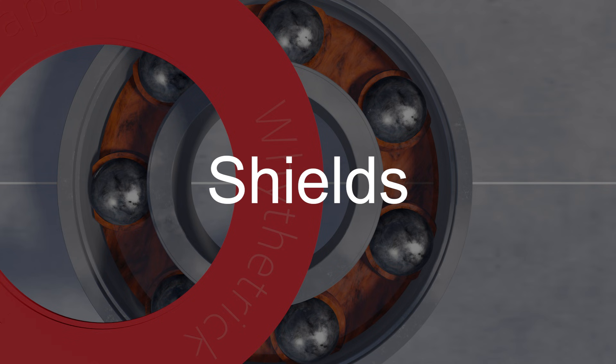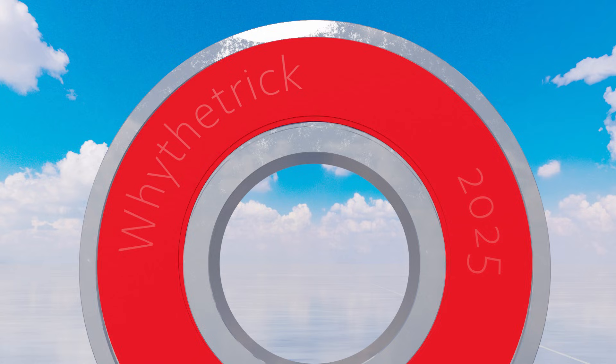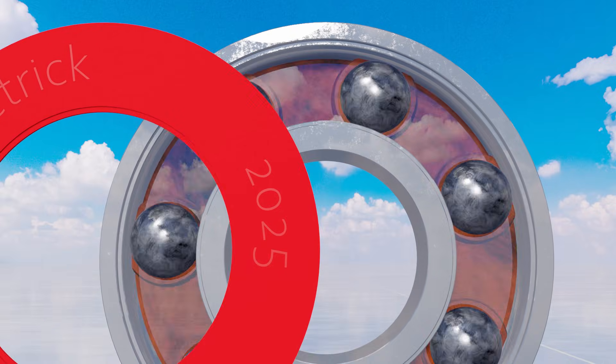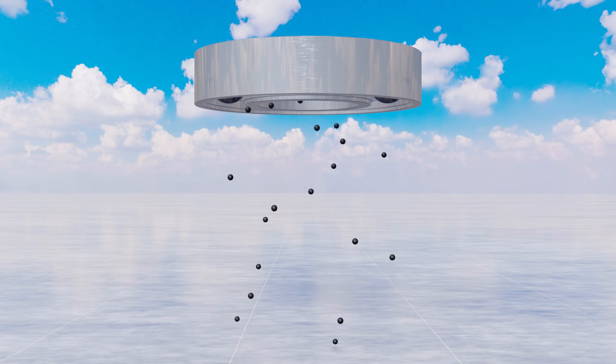Next, let's talk about shields. The biggest enemy of smooth rotation is dust, and shields prevent it from entering. There was a trend some time ago to remove the shields. The idea was that with the shields off, dirt inside the bearing could escape more easily.